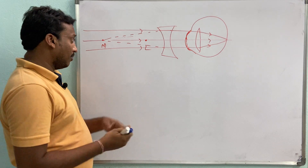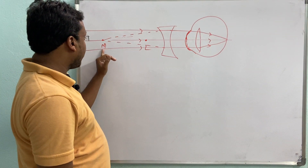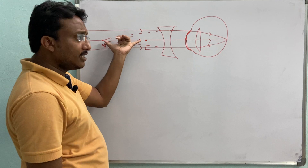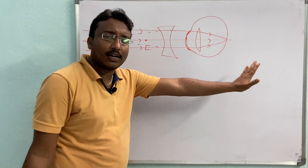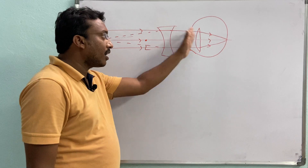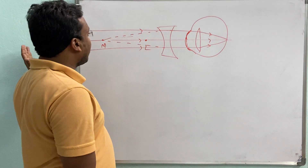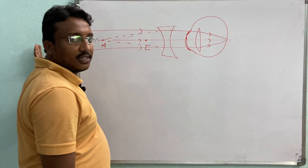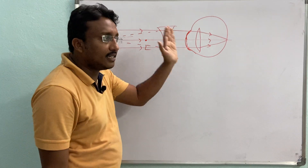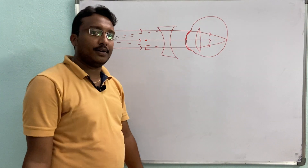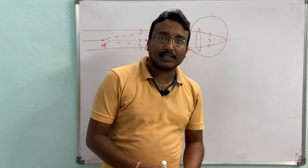This is the least distance of distinct vision. The object which is present between the extreme point and least distance of distinct vision — the person is able to see the proper image. If the object is behind the extreme point, then he is unable to see it. That defect is called myopia, and we can correct it by using a concave lens.